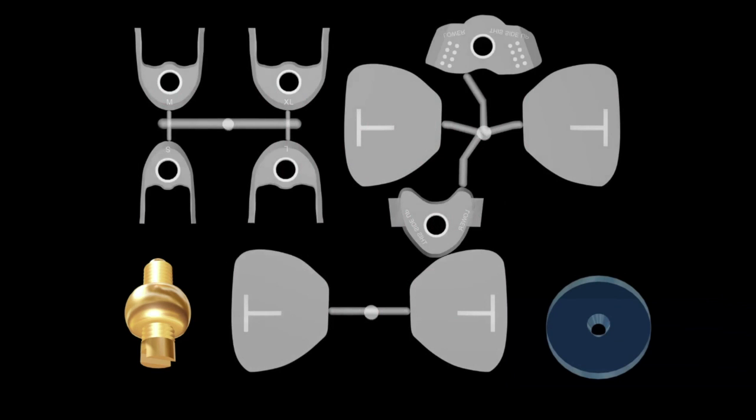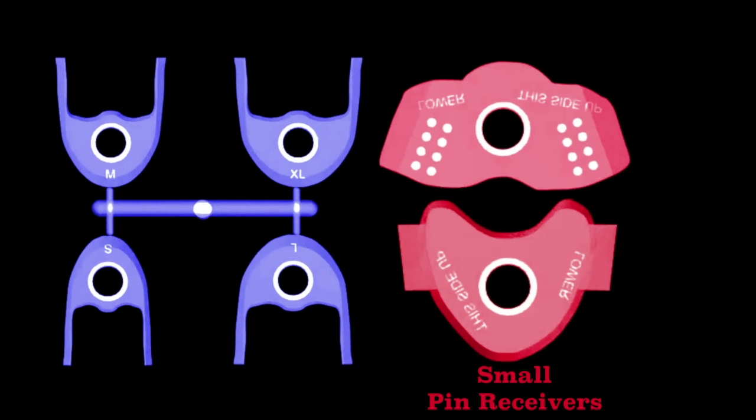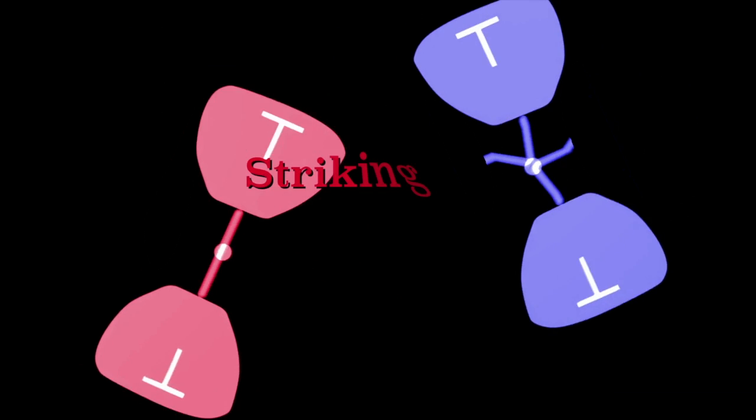The jaw recorder is supplied as a complete set, comprised of these parts: small pin receivers, large pin receivers, modified pin receivers, and striking plates.